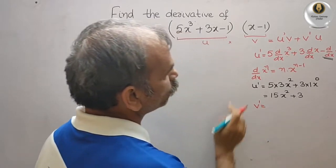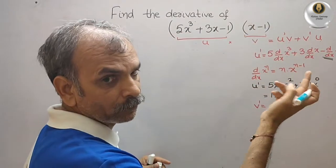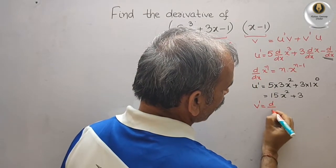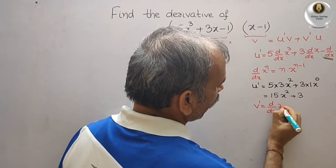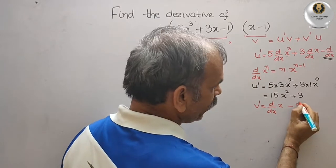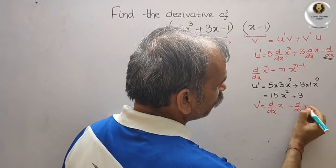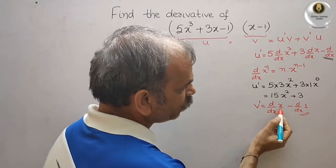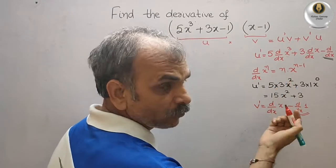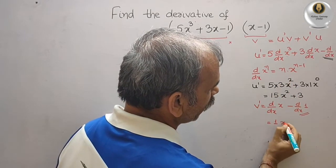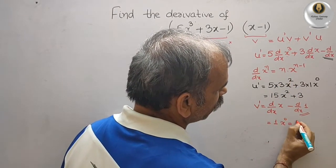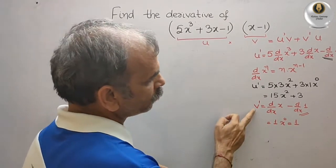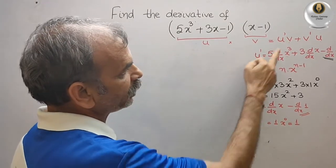v dash is the derivative of (x - 1), which is d/dx of x minus d/dx of 1. The derivative of 1 is 0, and d/dx of x gives 1 times x to the power of 0, which equals 1. So v dash equals 1. Now we will substitute v dash and u dash into our formula.